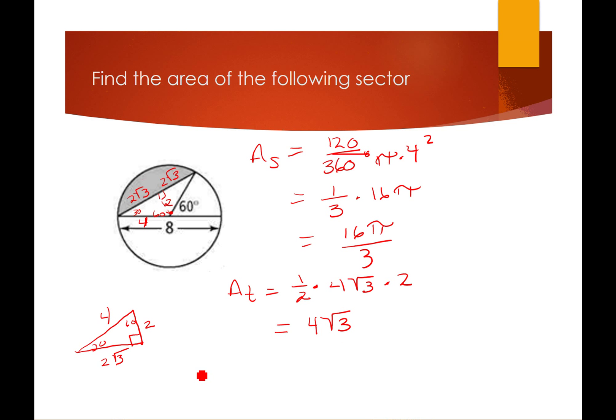So then the area of my segment is going to be 16π/3 minus 4√3. And again, you can just plug that all into your calculator or leave it that way.